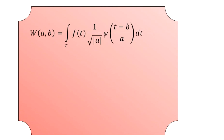We can denote it mathematically by W of (a, b), which is equal to the time integral of f(t) multiplied by 1 over the square root of a, times psi of (t minus b) divided by a, dt. This can be obtained by making small a equal to 2 to the power minus j, where j and k are integers.